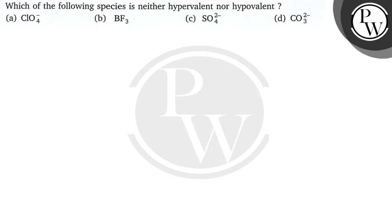Hello, let's read the question. The question says: which of the following species is neither hypervalent nor hypovalent? The species are perchlorate ion, boron trifluoride, sulfate ion, and carbonate ion. So let's do the question.